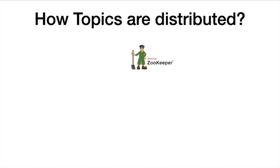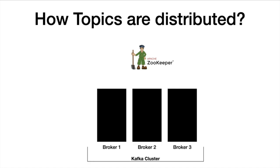We have a Zookeeper and a Kafka cluster. In this example, we have a cluster with three brokers. Out of the three brokers, one of the available brokers will behave as a controller. Normally, this is the first broker to join the cluster. Think of this as one additional role for the broker.